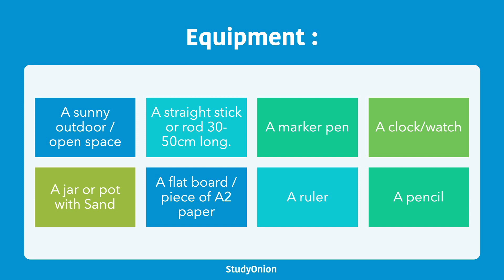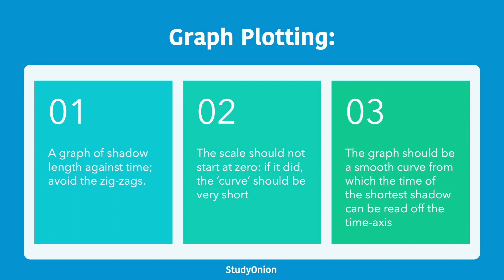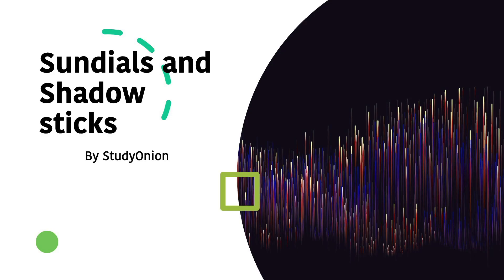The equipment needed for this experiment includes a sunny outdoor space, a straight stick or rod 30 to 50 centimetres long, a marker pen, a clock or watch, a jar or pot filled with sand, a flat board or piece of A2 paper, a ruler, and a pencil. To perform the experiment, mark the tip of the shadow with a small cross every five minutes from about 10:30 to 1:30, or 11:30 to 2:30 during daylight saving time, along with the time indicated by a phone or watch. Record the results in a table and plot a smooth curve with the axes not starting at zero.